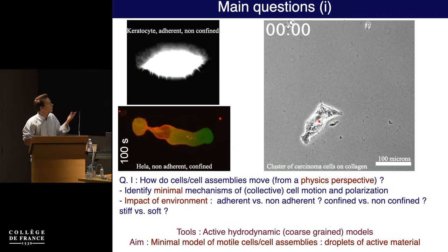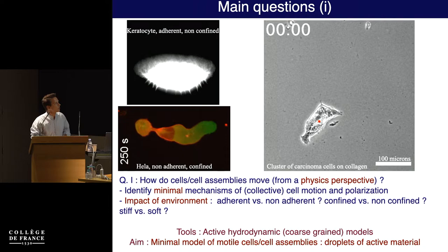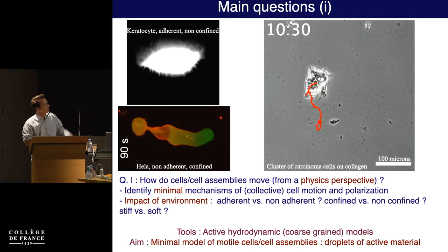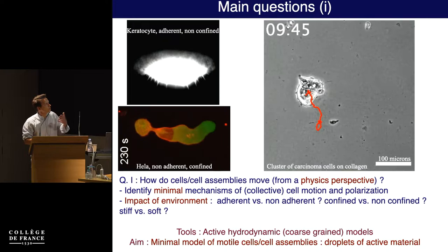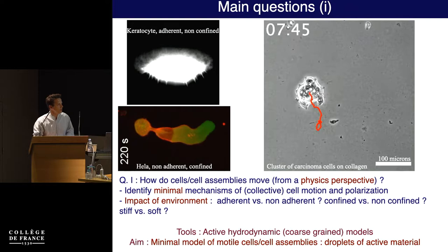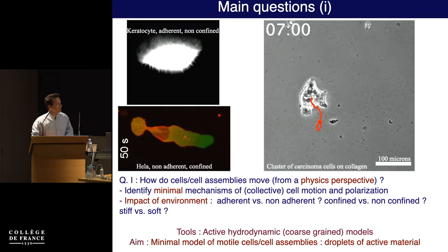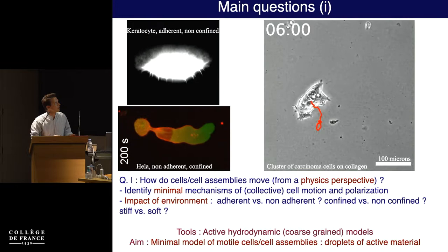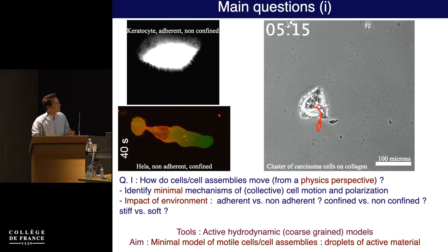Because physicists like to change scales, you can play the same game with cell clusters. Here you have a bunch of cells, maybe 20, seated on a collagen gel that moves, and we use physical models to describe this process. We deal with coarse-grained, continuous media models, and the key feature is that they must be active and consume energy to produce motion. That's why it's called an active material, an active hydrodynamic description of cell migration. More precisely today, I want to discuss the impact of the environment on these mechanisms.